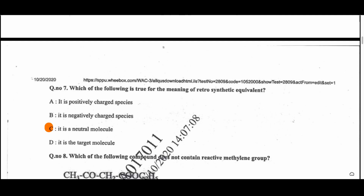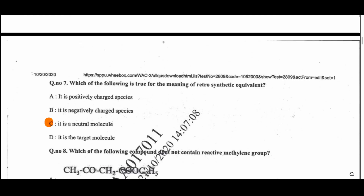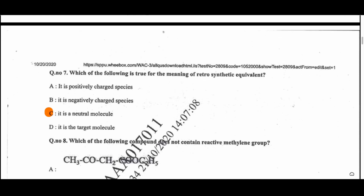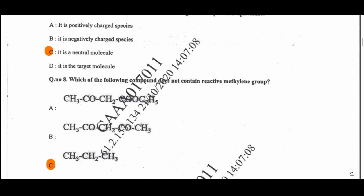Question 7: Which of the following is true for the meaning of retrosynthetic equivalent? Option C is the correct option — it is a neutral molecule.